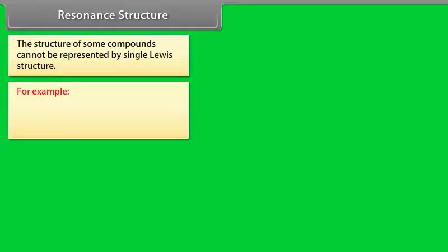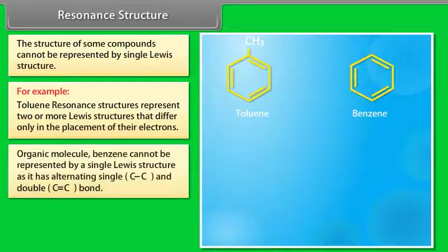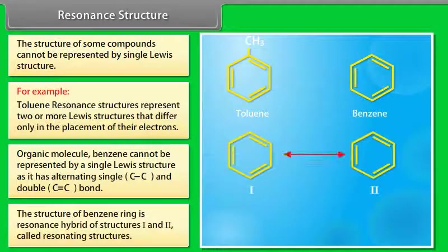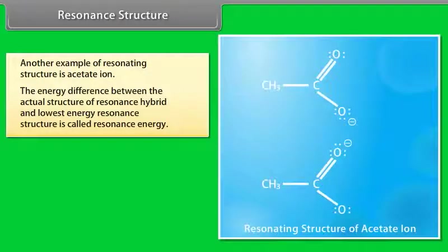The structure of some compounds cannot be represented by a single Lewis structure — for example, toluene. Resonance structures represent two or more Lewis structures that differ only in the placement of their electrons. Benzene cannot be represented by a single Lewis structure as it has alternating single and double bonds; its structure is a resonance hybrid of two resonating structures. Another example of resonating structures is the acetate ion. The energy difference between the actual resonance hybrid structure and the lowest energy resonance structure is called resonance energy.